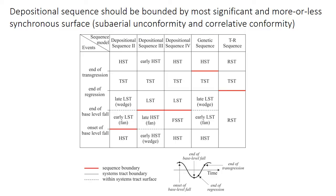But if you look at these models, you'll notice that they don't even agree on the systems track terminology, especially in the interval of base level fall. Some call that early LST, some call it late HST, some call it FSST, which is the standard term now.